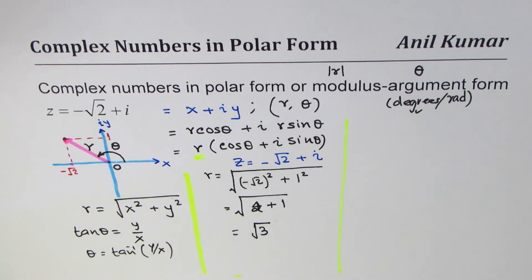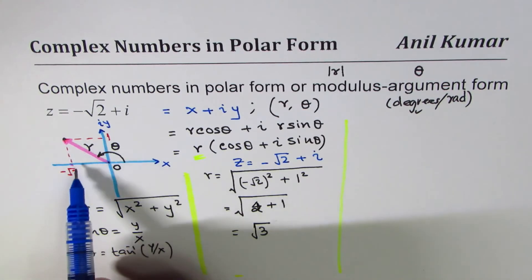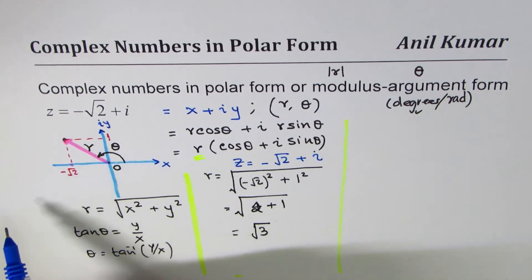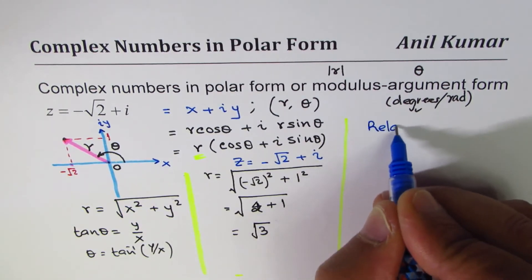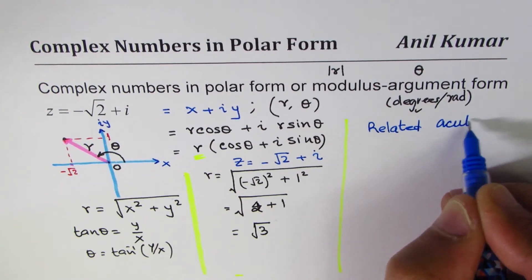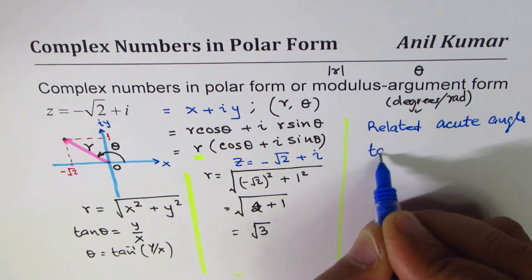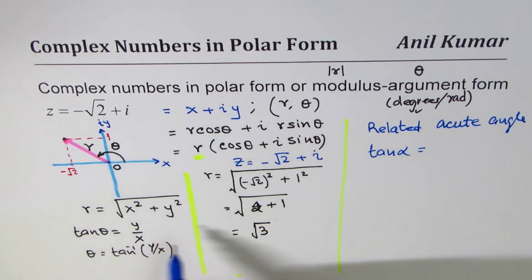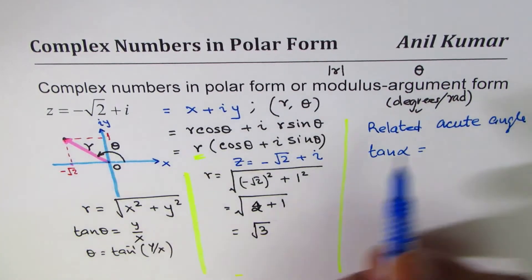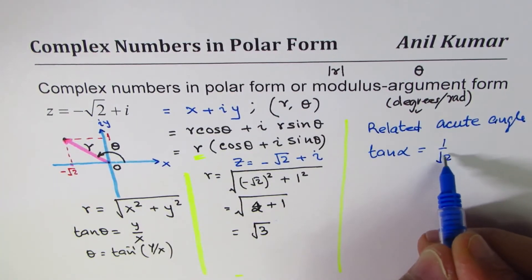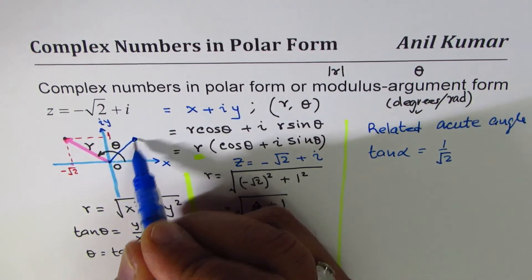We are in quadrant 2, so theta is greater than 90 but less than 180 degrees. The idea is always to find the related acute angle first. We find tan alpha — the acute angle always gives a positive value — so it will be 1 over square root 2. We are taking the positive value since we are talking about the triangle.